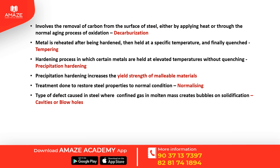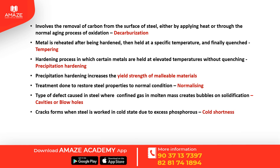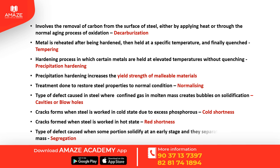Types of defects in steel: Cavities or blow holes are caused when confined gas in the molten mass creates bubbles upon solidification. Cold shortness is a defect caused by excess phosphorus, where cracks form in steel when worked in cold state. Red shortness is a defect where cracks form in steel when worked in hot state. Segregation is a defect wherein certain portions tend to solidify first and later separate out from the main mass.